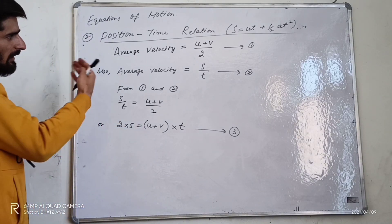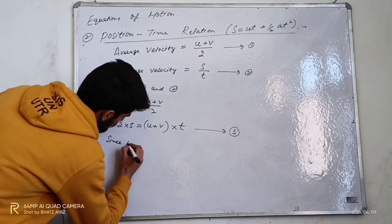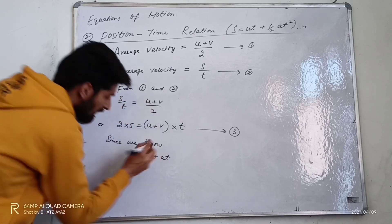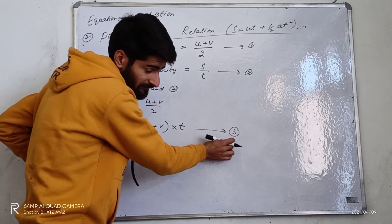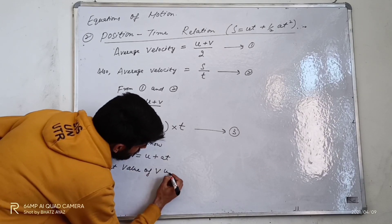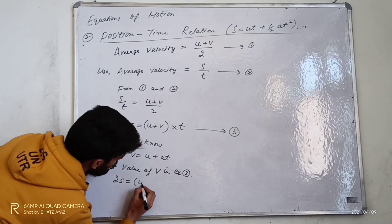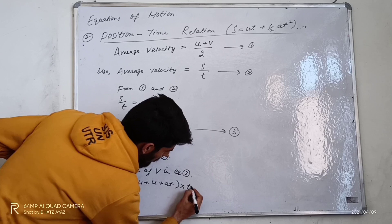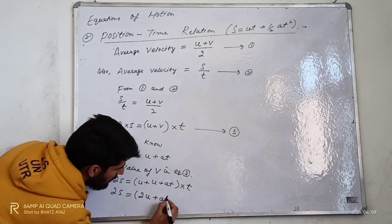Also, since we know from our first equation that v is equal to u plus at, I will now put the value of v into this equation. So I can write: 2s is equal to u plus (u plus at) into t, which gives 2s is equal to (2u plus at) into t.